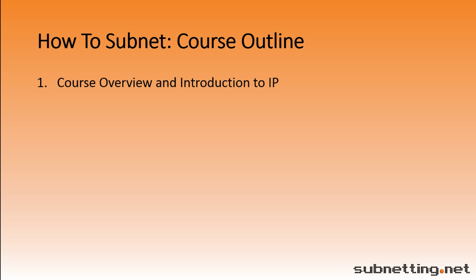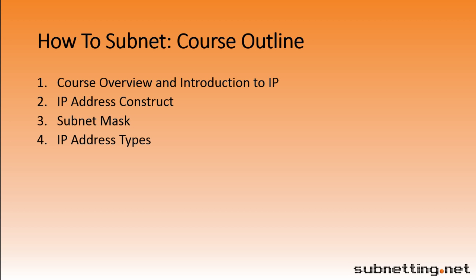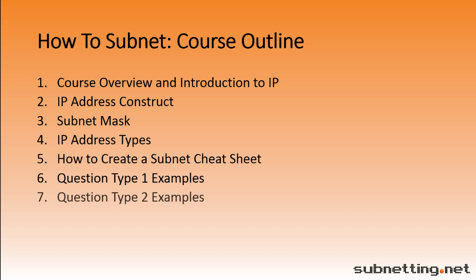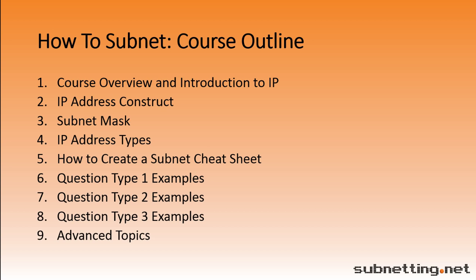This video series contains 9 lessons. Lesson 1 is this Course Overview and Introduction to IP. Lesson 2 is on IP Address Construct, which includes bits and how binary works. Lesson 3 is on the subnet mask, including shorthand notation. Lesson 4 is on IP Address Types, which includes classes, private ranges, and reserved host addresses. Lesson 5 is on how to create a subnet cheat sheet — useful to help you subnet quickly and accurately without having to do too much math in your head. The next 3 lessons show you how to apply what you've learned, as all subnetting questions can be broken down into 3 main question types, with a lesson dedicated to each. The final lesson is on advanced topics, including variable length subnet mask (VLSM) and route summarization.